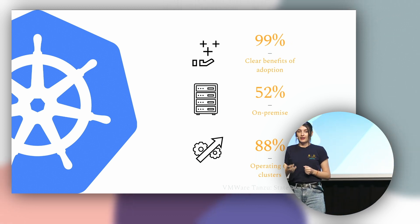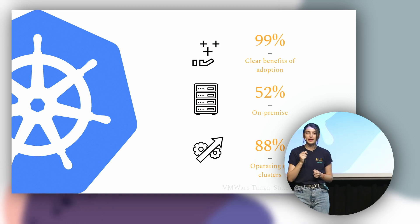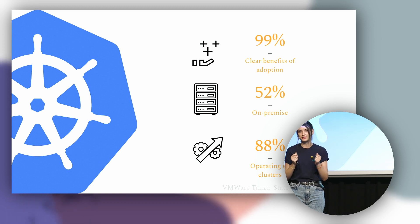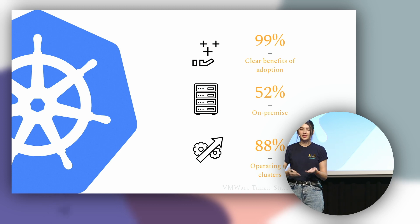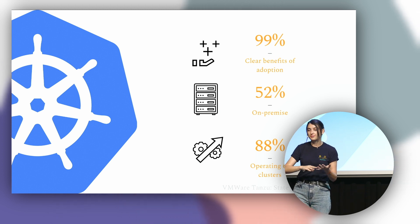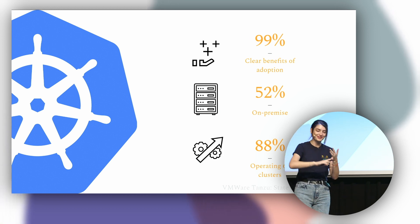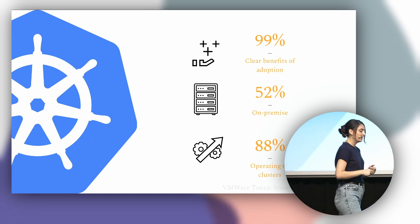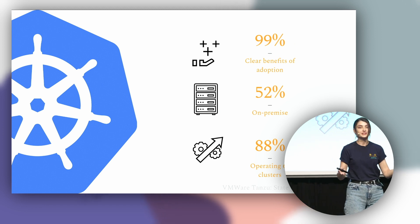We can still see that more organizations have a need for on-premise provisioning on bare metal. Another important metric: 88% of organizations manage more than six clusters. This is because once you learn Kubernetes and deploy it once, you need to replicate that same process for different environments. You're going to have QA, staging, and production environments, as well as different regions. So by default, you'll have at least three clusters.